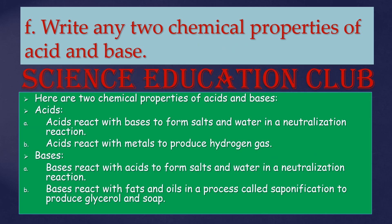Write any two chemical properties of acid and base. Acids: acids react with bases to form salt and water in a neutralization reaction; acids react with metals to produce hydrogen gas. Bases: bases react with acids to form salt and water in a neutralization reaction; bases react with fats and oils in a process called saponification to produce glycerol and soap.